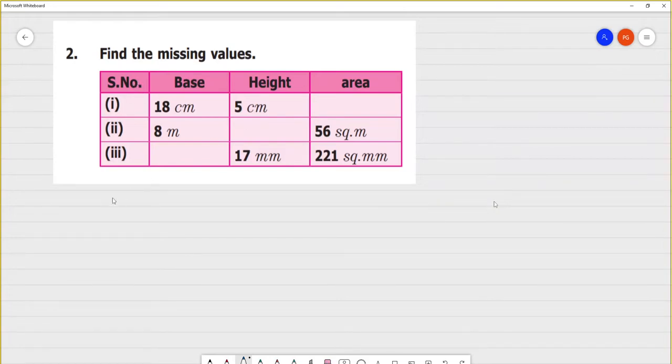Find the missing value. See, here we are going to find the area of the parallelogram. Area is equal to base multiplied by height.